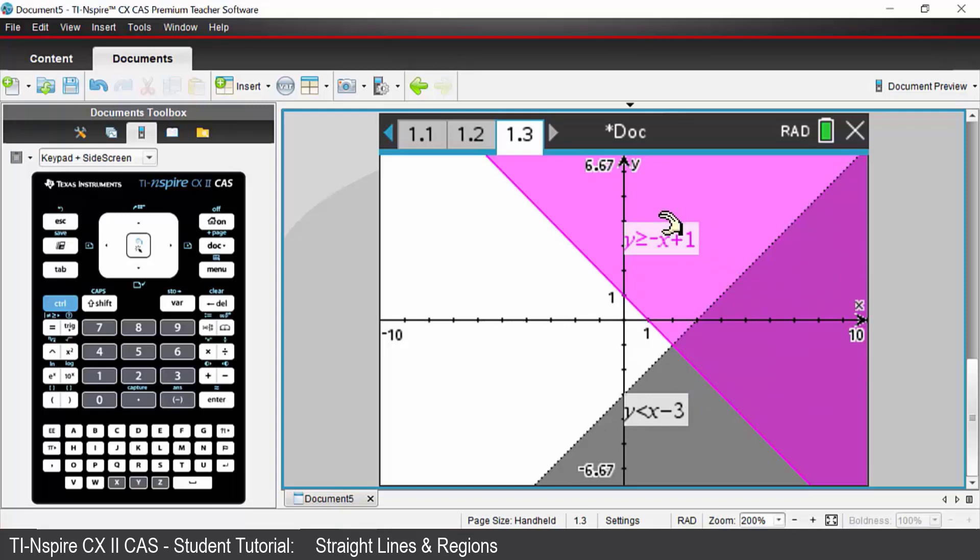Also note that when you have a bigger than or equal to symbol on our negative x plus 1 line, we have a solid boundary line to indicate the bigger than or equal to. And if we've got a strictly less than symbol, we have a dotted line on our boundary.